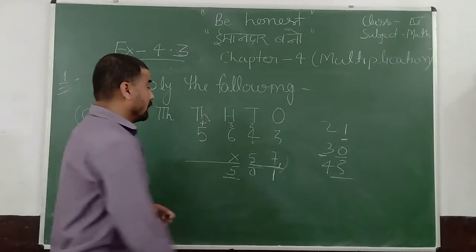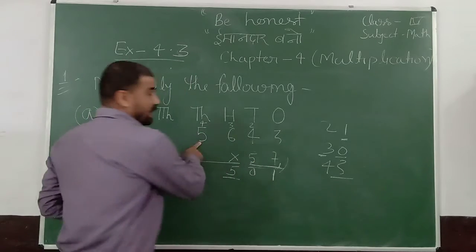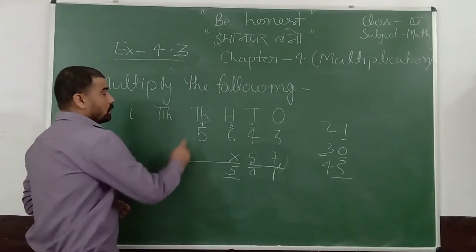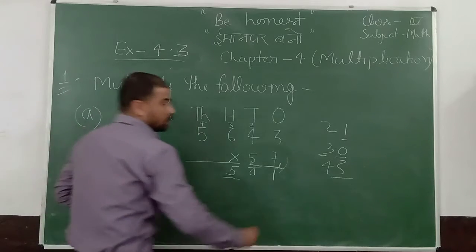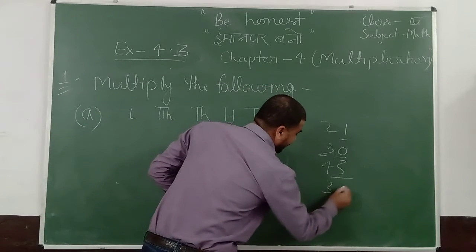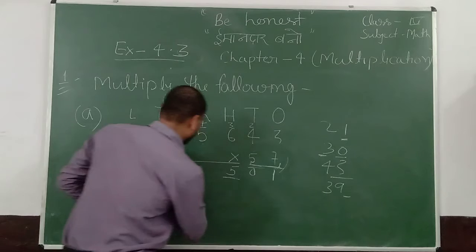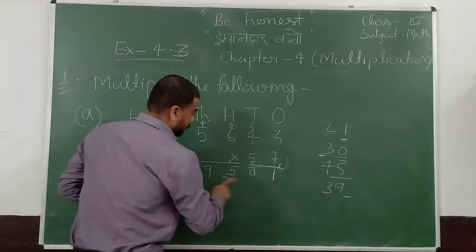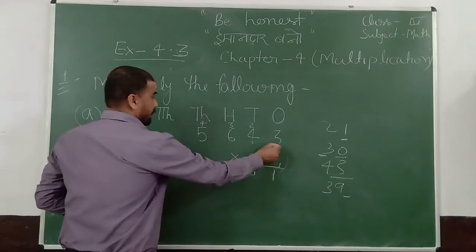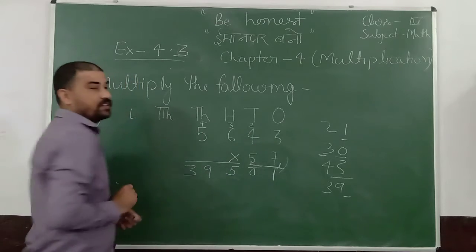Now 7 into 5, 35. 35 plus 4 is 39. So put 39 here. That is your total of 7 multiplied by this number.